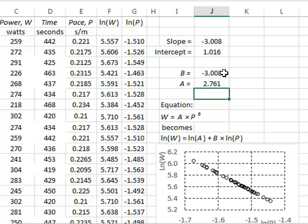So the best fit values for our theoretical equation are that W equals A, which is 2.8, multiplied by P, the pace, to the power of minus 3.008. So this is very close to the published equation, where the power is equal to 2.8 divided by, because of the minus sign, the cube of the pace.